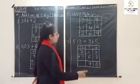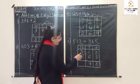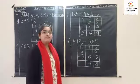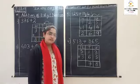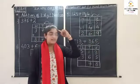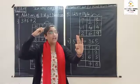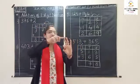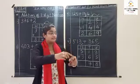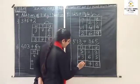Now come to hundreds place: five plus three. Keep five in mind and remove three fingers. After five: six, seven, eight. So five plus three is equal to eight.